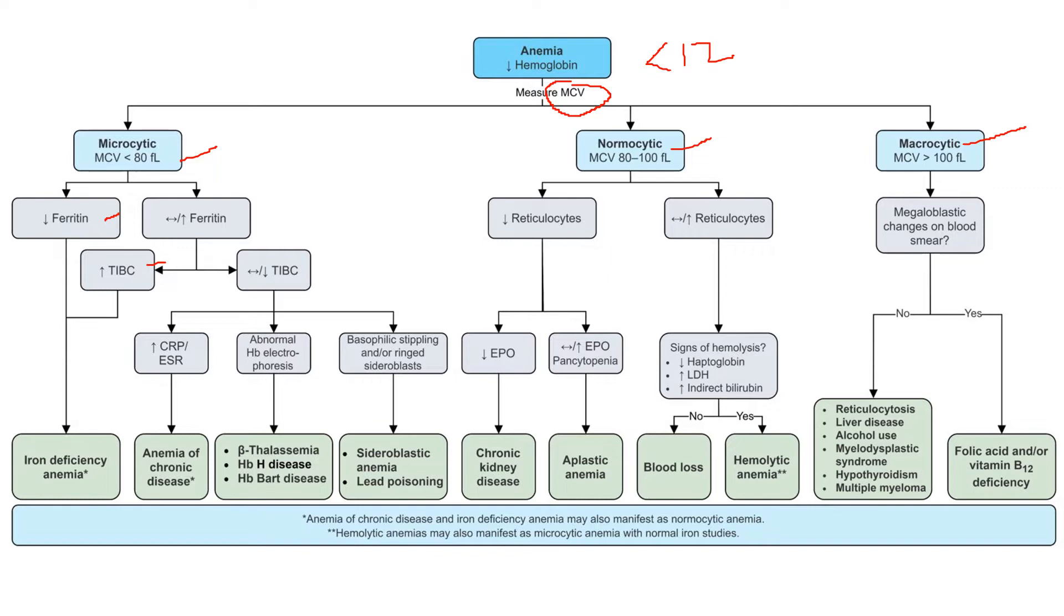In most of the cases, ferritin and transferrin will go in opposite directions. A low ferritin means low iron stores and a high TIBC means high transferrin molecules, and those both mean that you're iron deficient. Your body wants to capture iron with the TIBC and your body does not have enough iron stores with the ferritin.